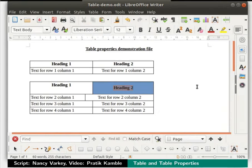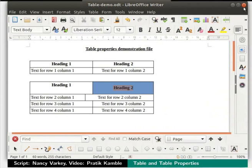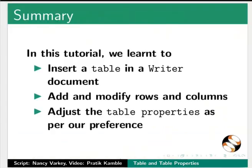Save our file by pressing Ctrl+S and then close it by clicking on the X icon at the top right. This brings us to the end of this tutorial. In this tutorial, we learned to insert a table in a writer document, add and modify rows and columns, and adjust the table properties as per our preference.